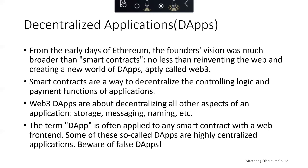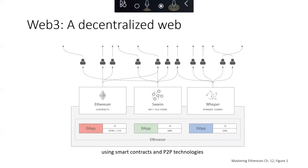One thing to keep in mind is that the phrase dApp is often applied to any web application that uses a smart contract, even though many web applications with smart contracts are in fact highly centralized. Here's a diagram of a smart contract Web3 application that is truly decentralized — not only does it have a smart contract, but it's also using decentralized storage like Swarm and decentralized messaging using Whisper.